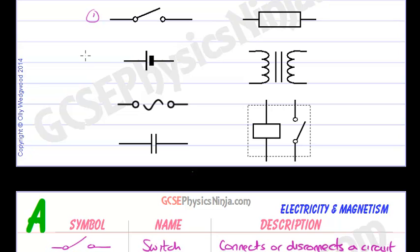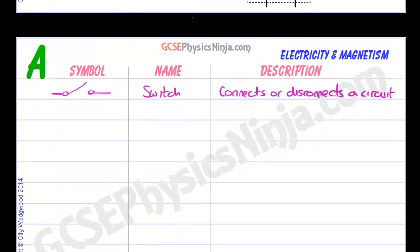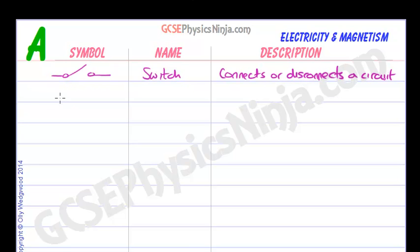The next symbol, number two, is a cell. Now a cell is an electrical energy source. And the larger line here is the positive terminal. So we can say that this is a source of electrical energy and it has a voltage, a potential difference, which will drive a current around a circuit if it's a complete circuit. So it's got a constant voltage.